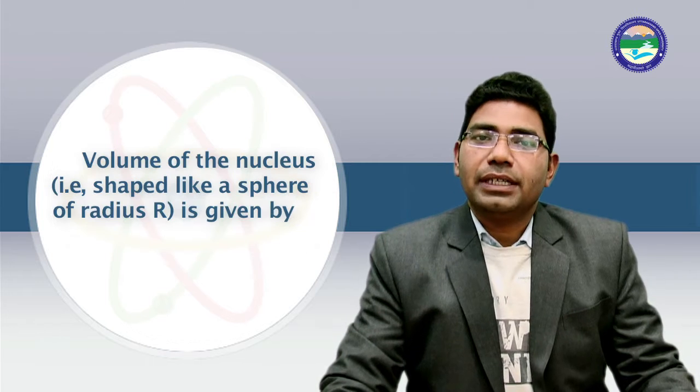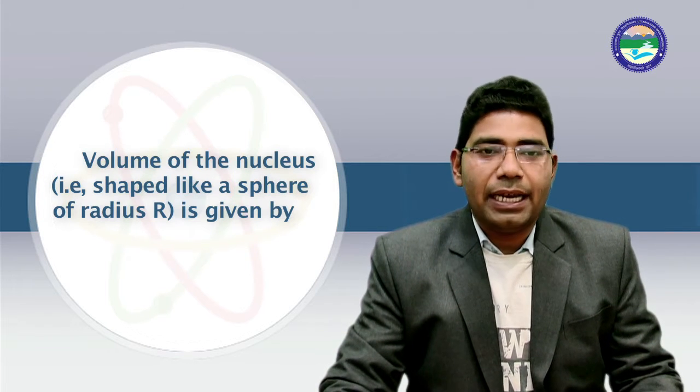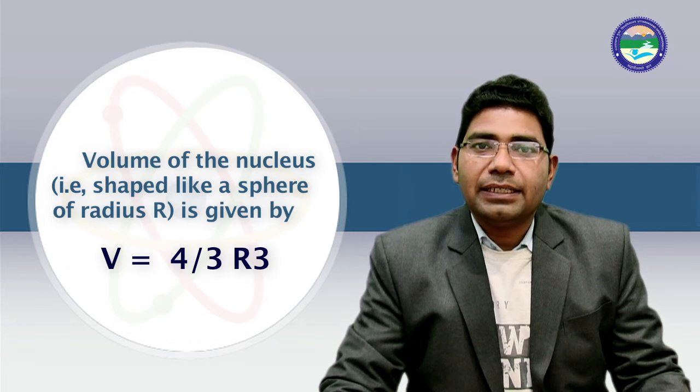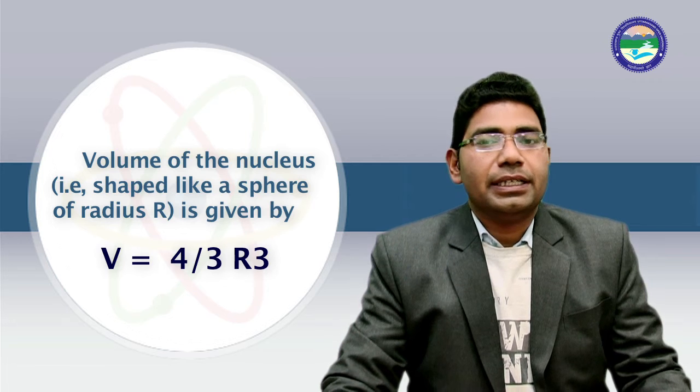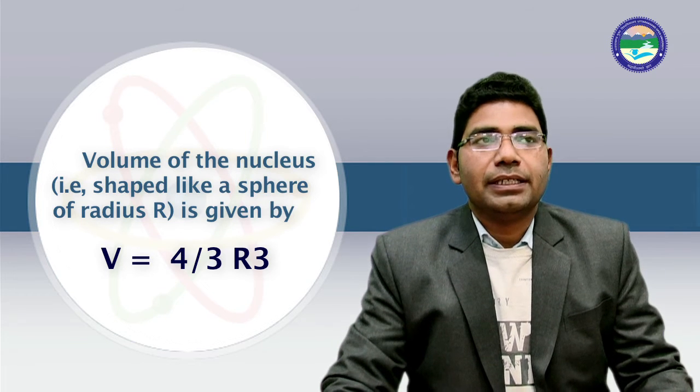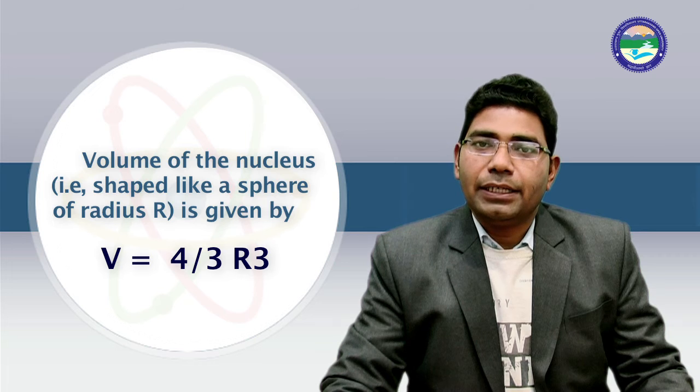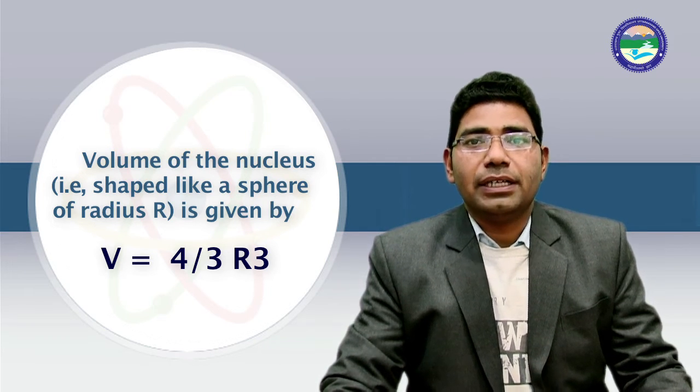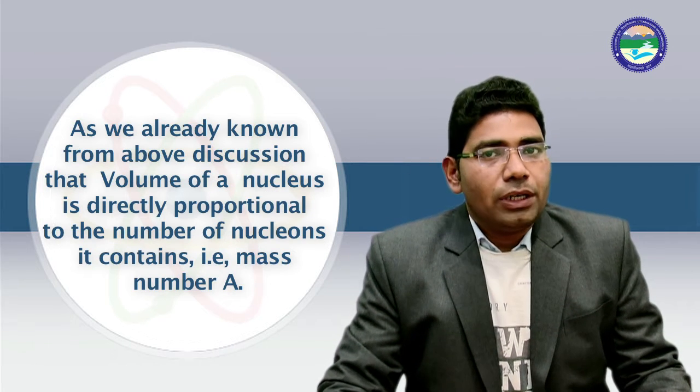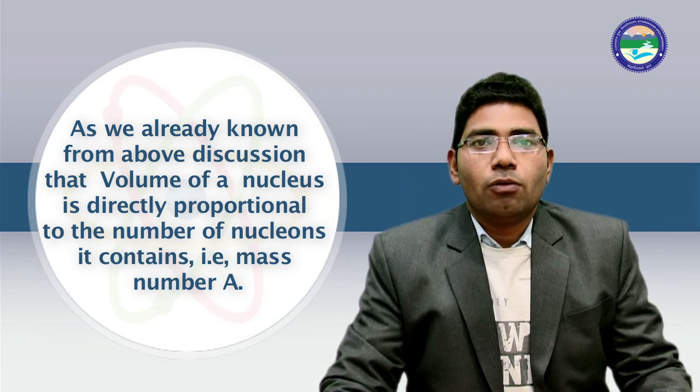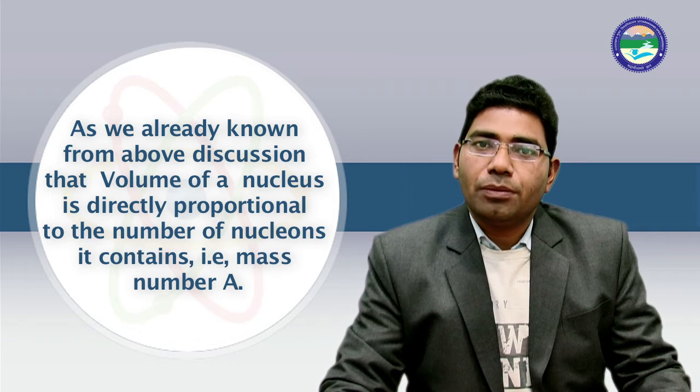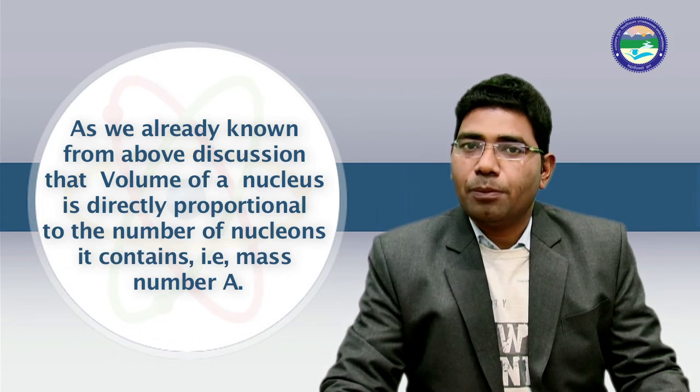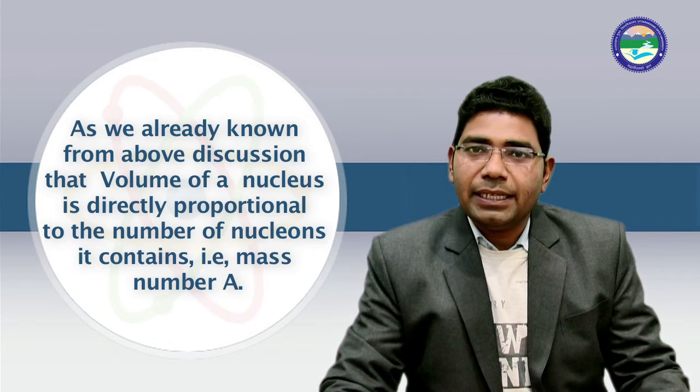The volume of the nucleus, which is shaped like a sphere with radius R, is given by V equals 4 by 3 pi R cube. As we know that volume of the nucleus is directly proportional to the number of nucleons, this is the mass number. We can say this volume is directly proportional to the mass number A.